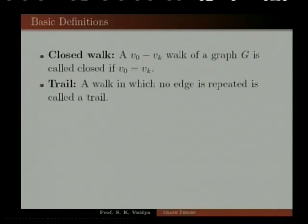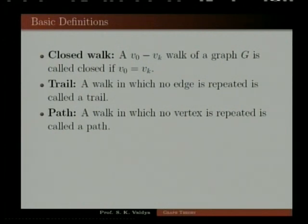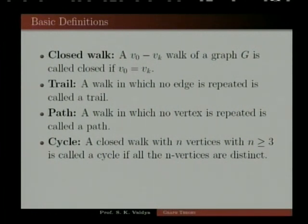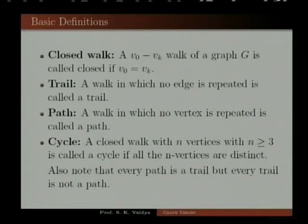Trail: a walk in which no edge is repeated is called a trail. Path: a walk in which no vertex is repeated is called a path. A closed walk with N vertices (N ≥ 3) is called a cycle if all N vertices are distinct. Note that every path is a trail, but every trail is not necessarily a path.